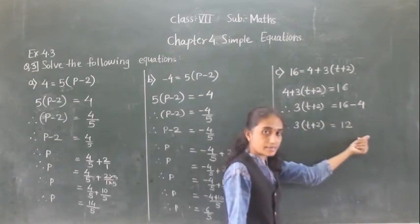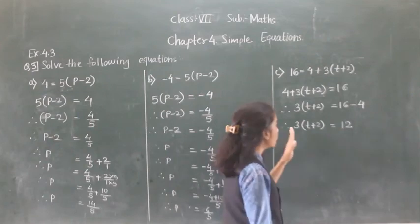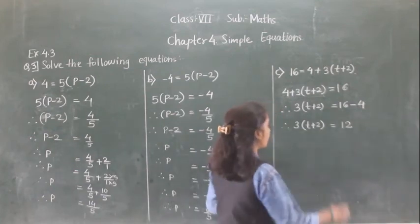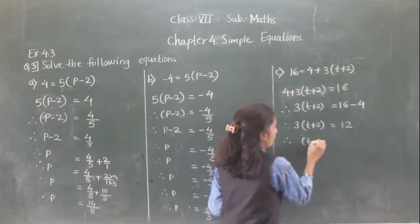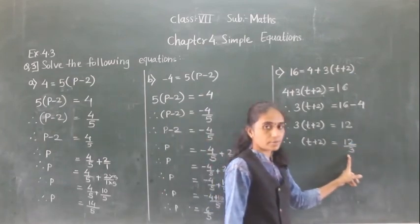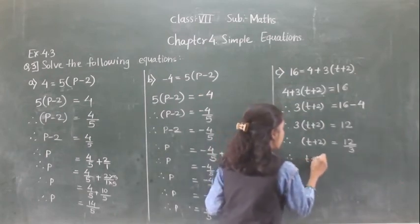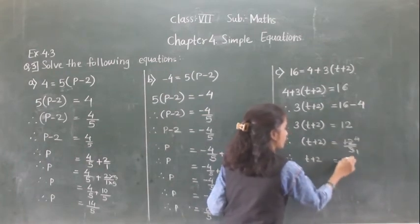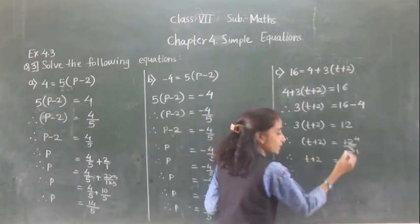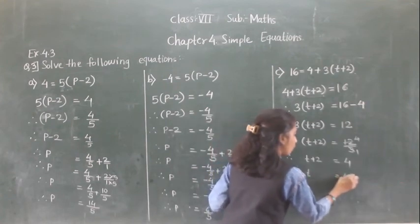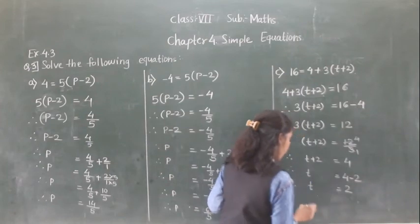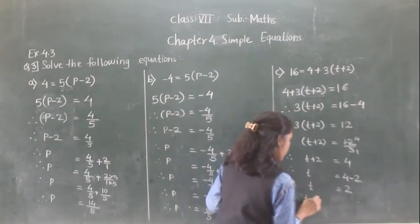Now we transfer 3 to the right hand side. Since 3 is multiplication, if it comes to the right hand side it will become division. So T plus 2 is equal to 12 divided by 3, which is 4. Now 2 is here as plus; if it comes to the right hand side it becomes minus. So P is equal to 4 minus 2, which is 2.